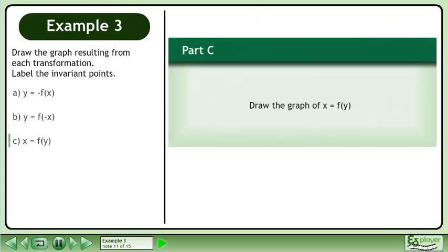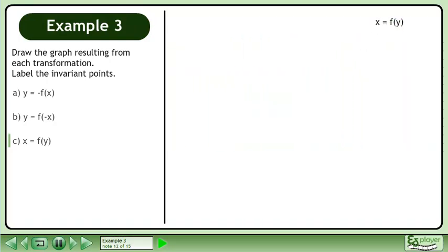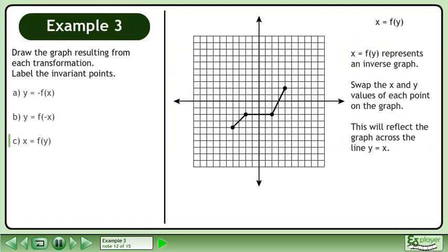In part C, we'll draw the graph of x equals f of y. x equals f of y represents an inverse graph. Swap the x and y values of each point on the graph. This will reflect the graph across the line y equals x.